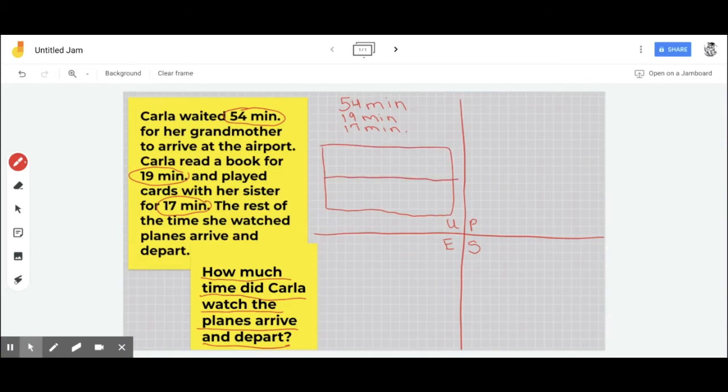And remember, our largest number always goes in the bigger box. So I'm going to put 54 in the bigger box. Now, I have two numbers. So I have 19, and I have 17.